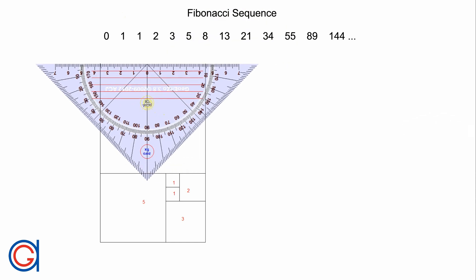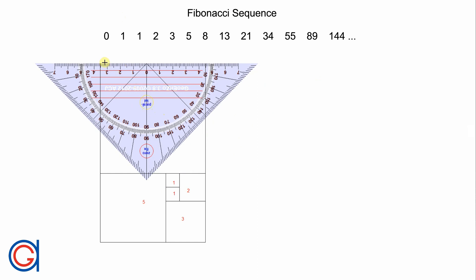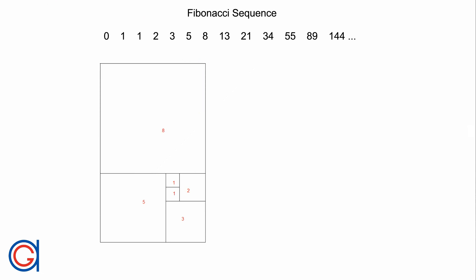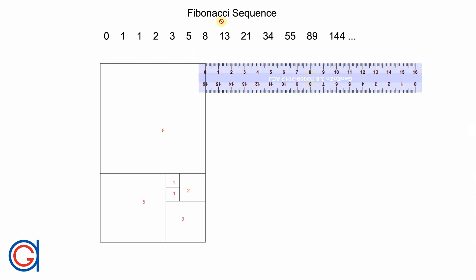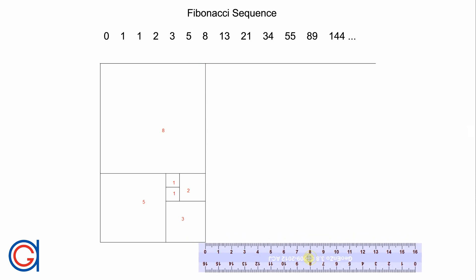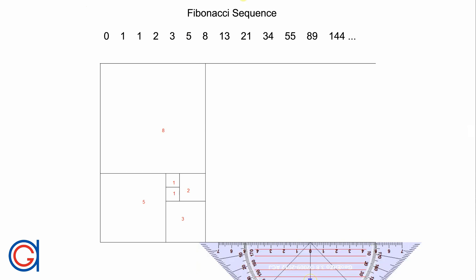The next pair in the sequence is five plus eight, which is 13. So this time we will continue on to the right-hand side, drawing a line 13 centimeters, then down 13 and across 13 again to complete the square. You can continue drawing successive squares with the Fibonacci sequence, but we are going to stop here at square 13.